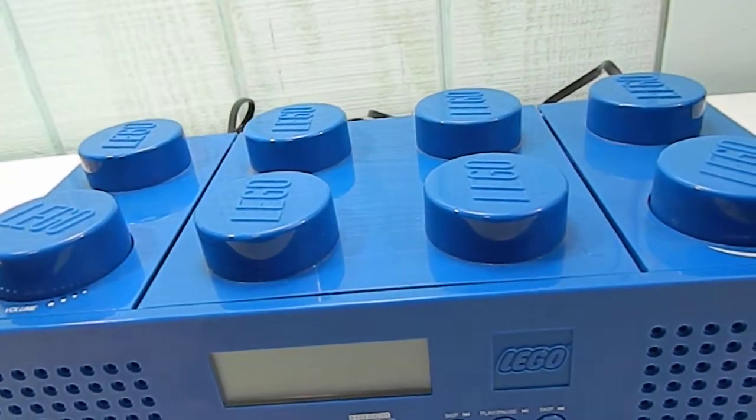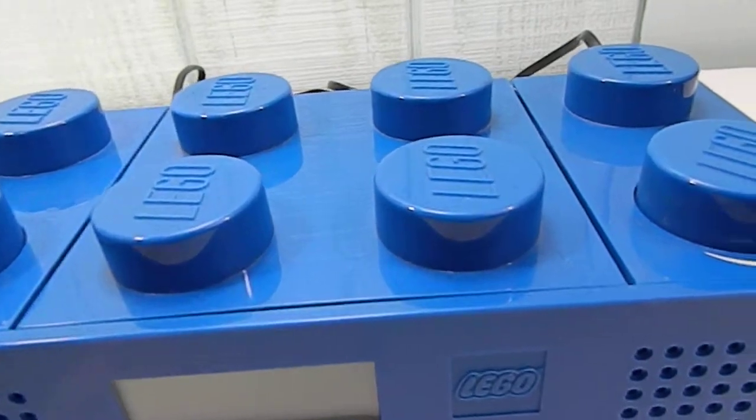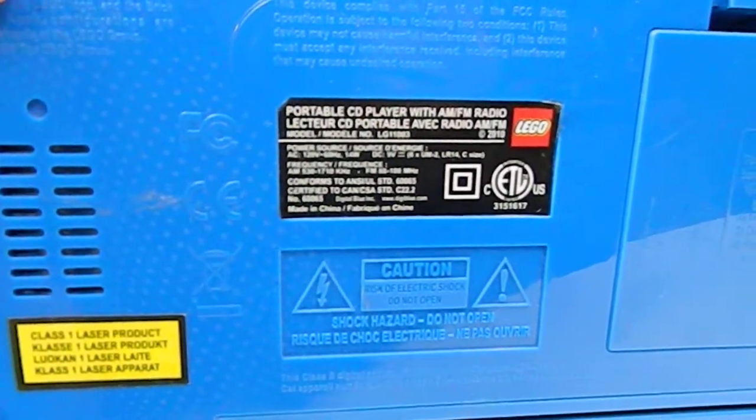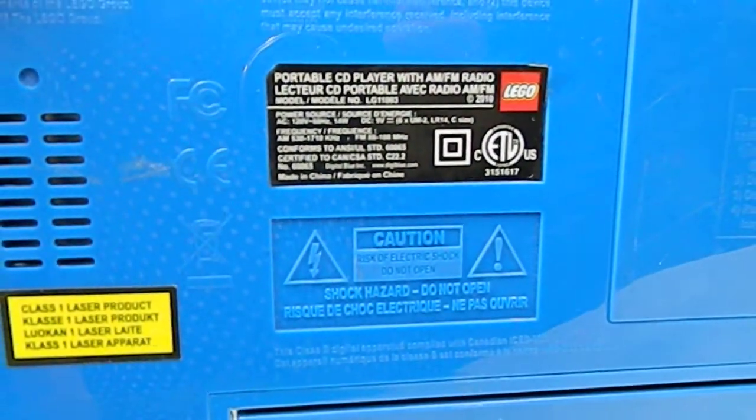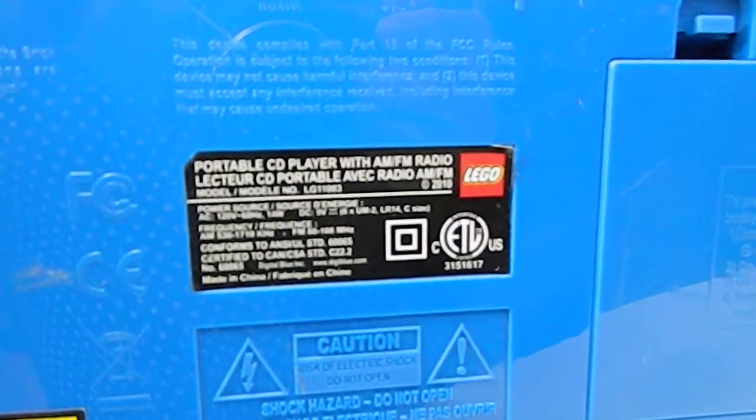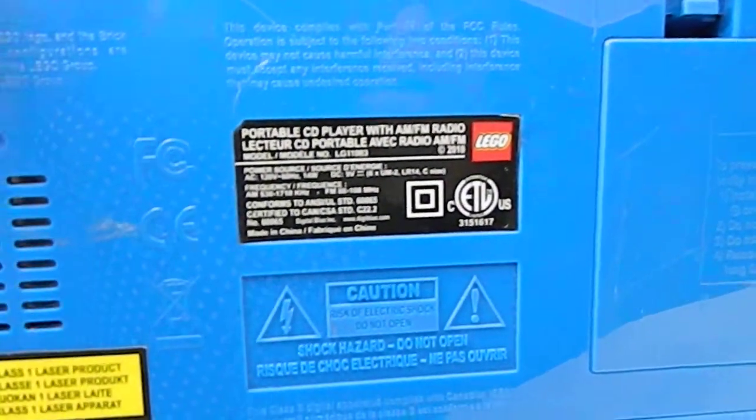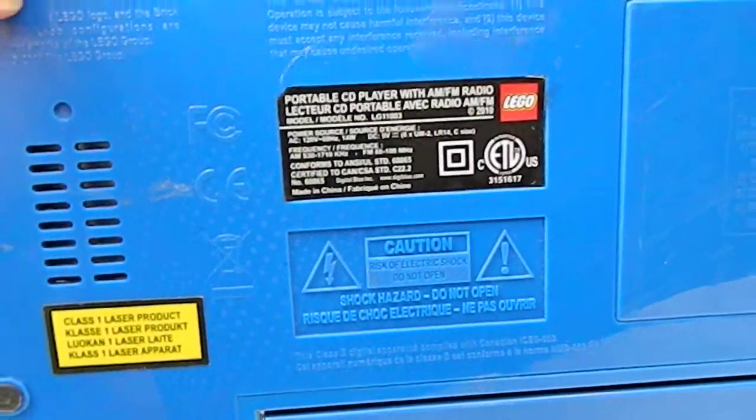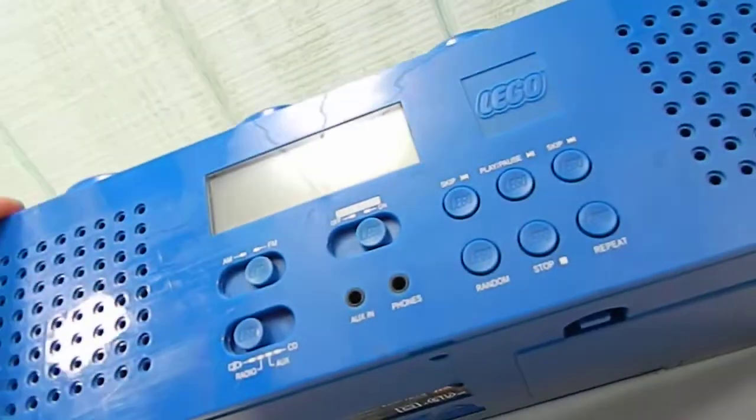Hi there, just taking a quick video of the Lego CD radio, portable CD player with AM FM radio. Just want to be transparent, it says 2010, and somewhere in there is the serial number which I'll add on the listing.